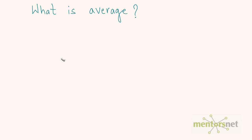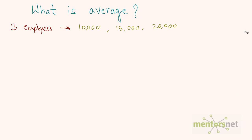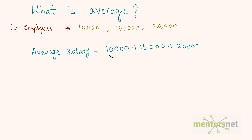Let's say we have three employees with salaries of 10,000 rupees, 15,000 rupees, and 20,000 rupees. What is the average salary of these three employees? The first step to calculate the average is to add these three salaries together.